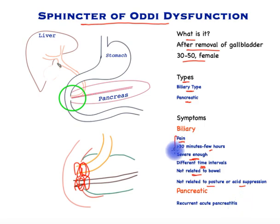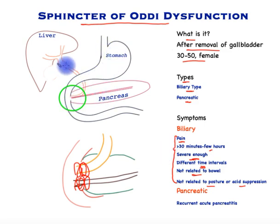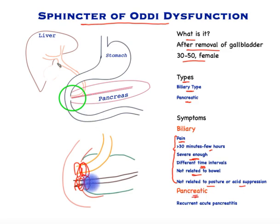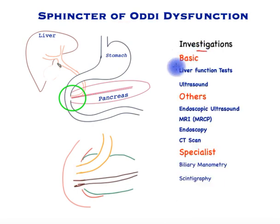The reason for such a precise definition of pain is to differentiate it from all other causes of pain, such as from the gullet, the stomach, the small bowel, gallbladder stones in the bile tube, biliary crystals in the bile tube, irritable bowel and a host of other conditions. The issue with the pancreatic sphincter of Oddi dysfunction causes recurrent attacks of acute pancreatitis.